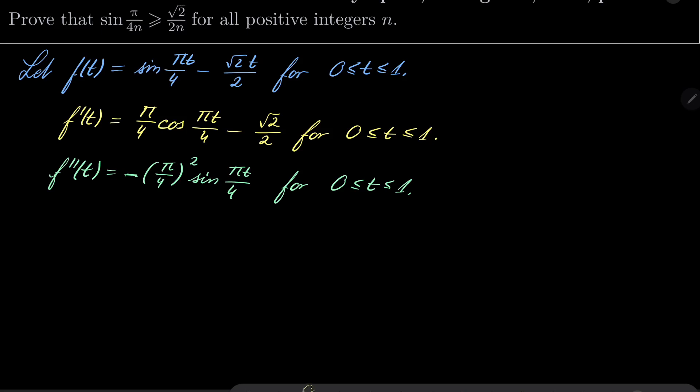Now since t is between 0 and 1, notice that πt/4 is between 0 and π/4. So this part is greater than or equal to 0, and we have a minus sign. So we can safely deduce that f''(t) < 0 for 0 < t < 1.